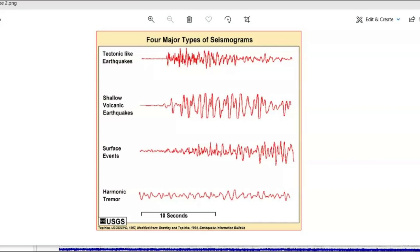Here we have an image of four different types of earthquakes. This was produced by USGS. The top one is tectonic like earthquakes. That's when the plates move. Shallow volcanic earthquakes. That is when you got magma coming into the system when the system's recharging and then surface events.